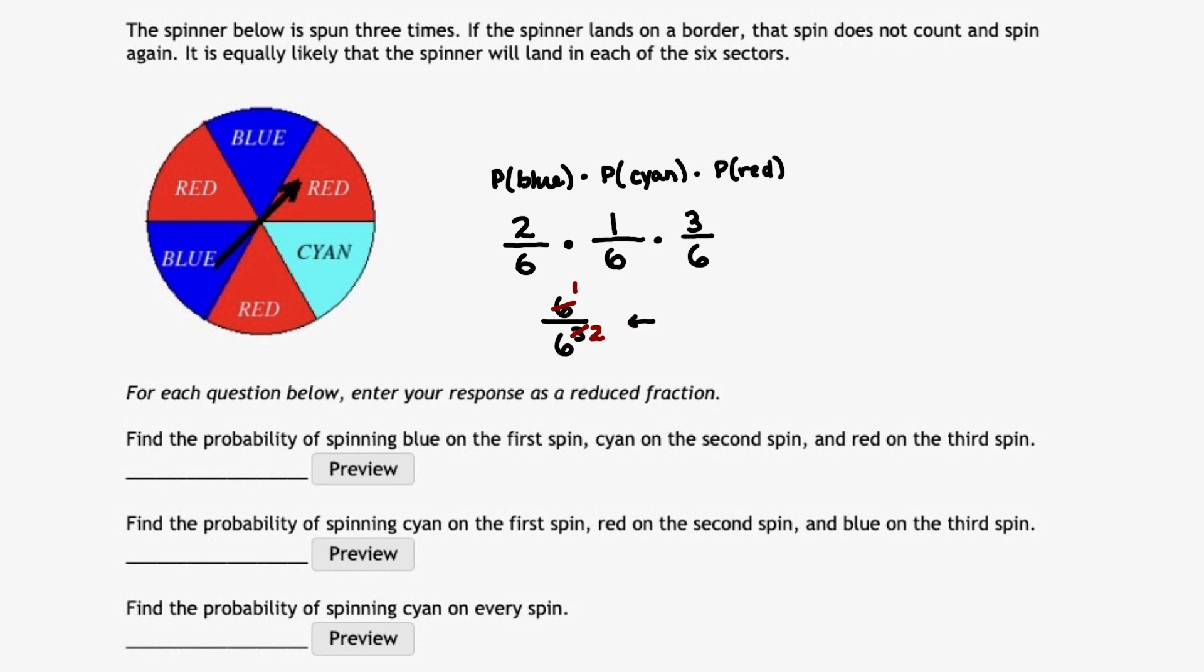Another way to look at it, if you'd like: I have one six on the top, and I have three sixes that are getting multiplied together on the bottom. So I can cancel one six from the top and one six from the bottom, and that leaves me with a final probability of one out of 36.